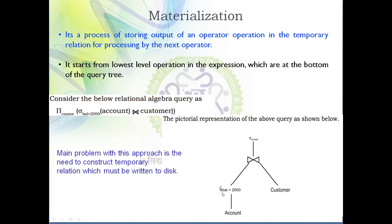In materialization, first selection is performed on the account relation, producing some output. That output is stored in a temporary relation, which is stored in secondary memory. It then comes back to main memory as input for the join operation. For example, selection on account produces output stored in temporary relation t1 in secondary memory. Then t1 and the customer table are given as input to join, producing output stored in temporary relation t2 in secondary memory. Finally, t2 is given as input to projection.